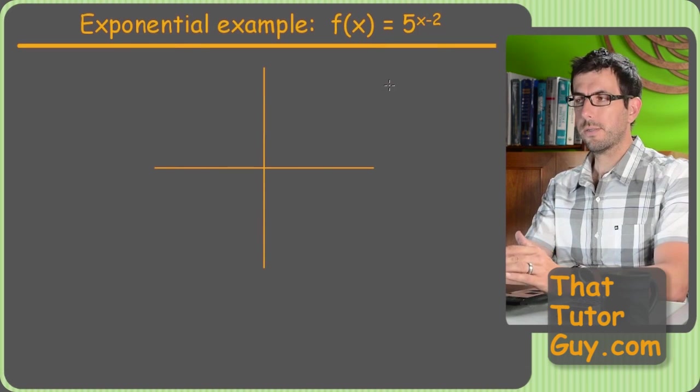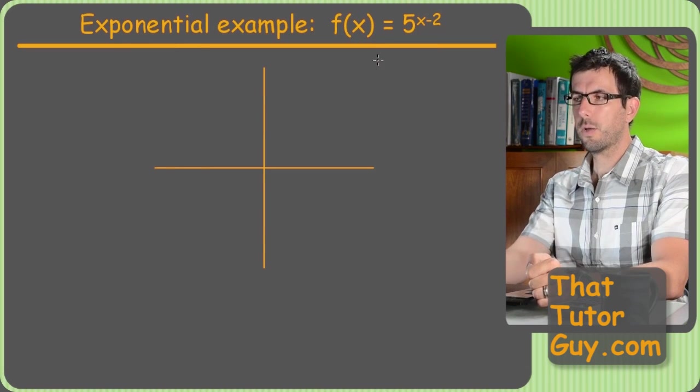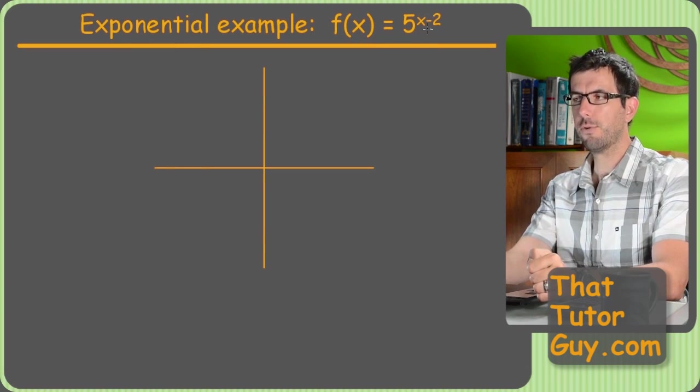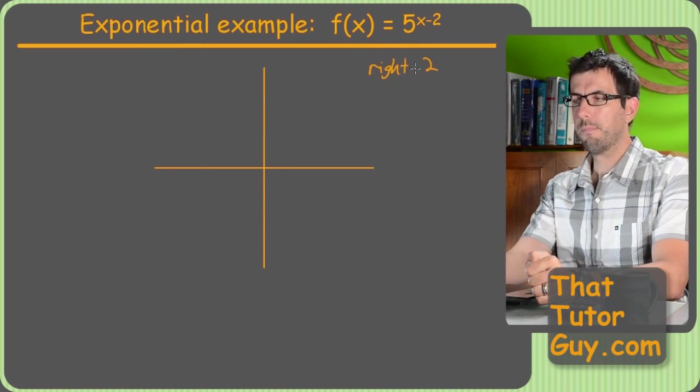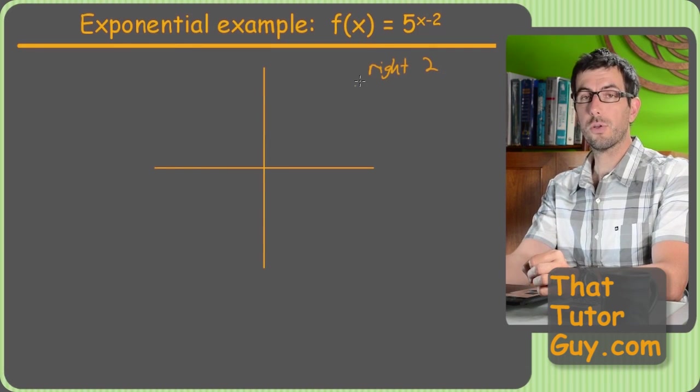We've got an exponential, because there's an x upstairs in the exponent, so that means we have a horizontal asymptote. So let's take a look at what our shifts are. It looks like we have a lateral shift of 2, and it's right, based on our transformation chapter stuff.